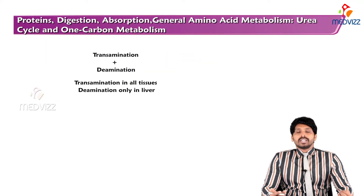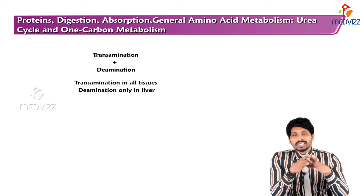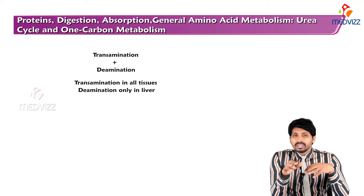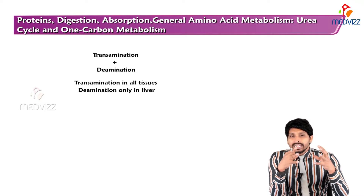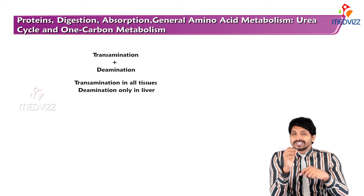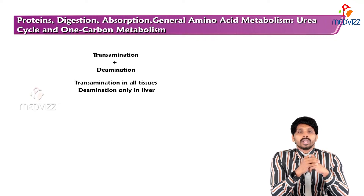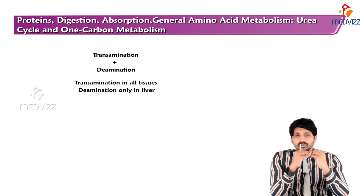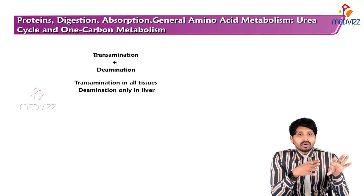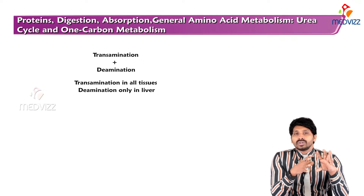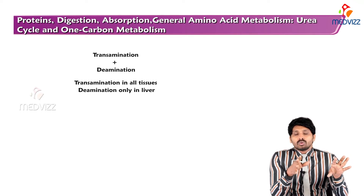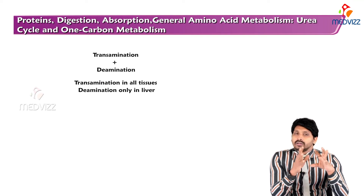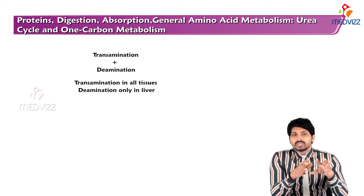Transdeamination is a coupled reaction. It involves both transfer of amino group (transamination) and removal of amino group (deamination). Transamination takes place in all peripheral and extrahepatic tissues, but deamination takes place exclusively in the liver. The removed amino group is free ammonia, which cannot be allowed to freely circulate in the bloodstream. Deamination occurs exclusively in the liver because the liver is a site for detoxification via the urea cycle.